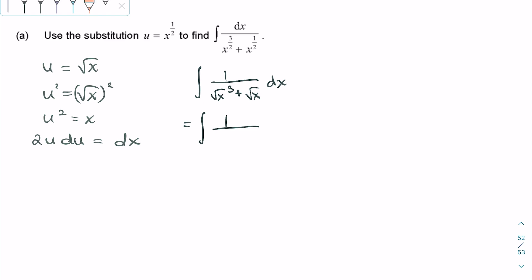We can now substitute square root of x with u, so the denominator becomes u cubed plus u. We can also replace dx to make it 2u du.